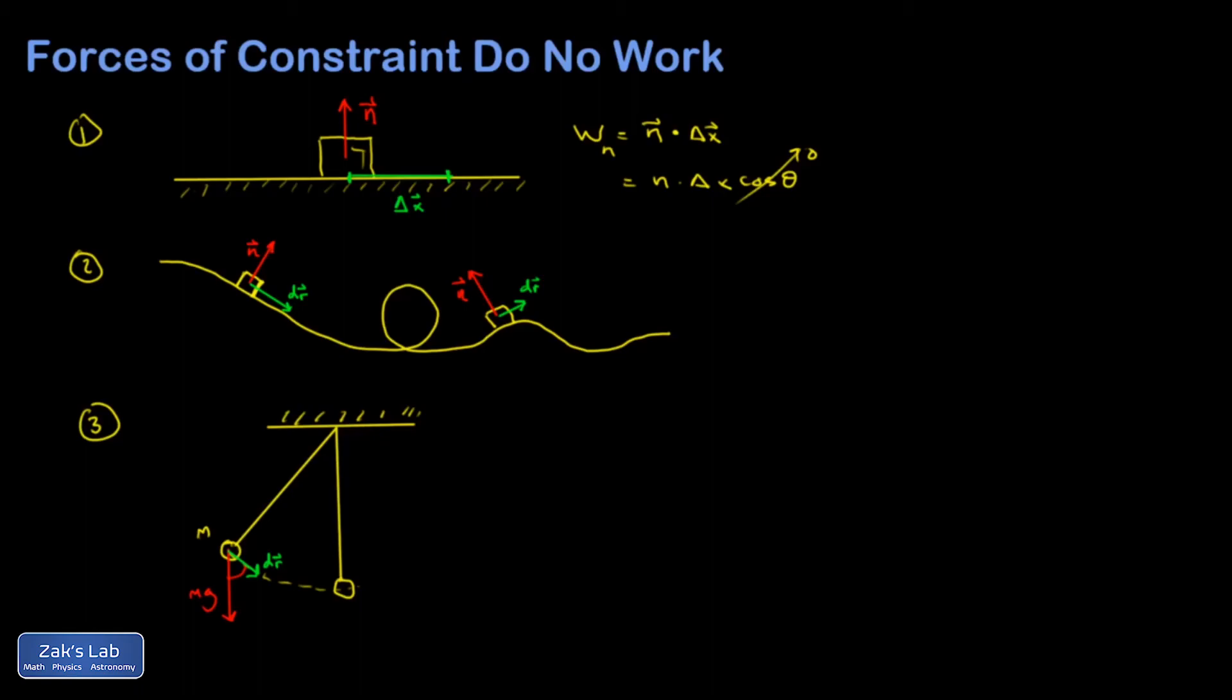But the force of constraint here - why is this thing moving on a circular path instead of falling straight down? What's enforcing the shape of the path? It's the tension in the string. Once again, I see that the constraint force is perpendicular to the direction of displacement at that moment.